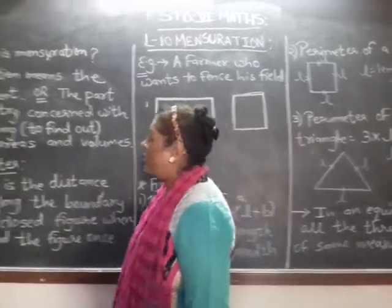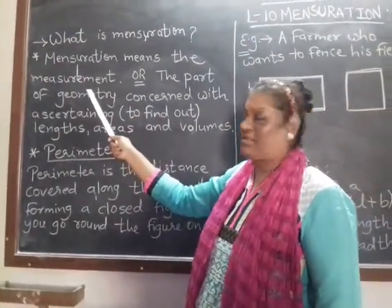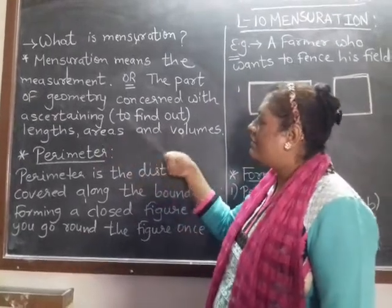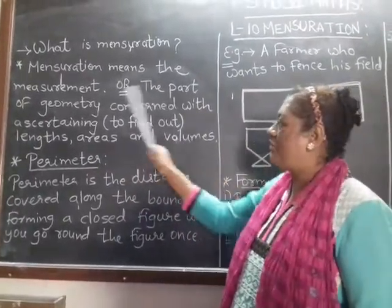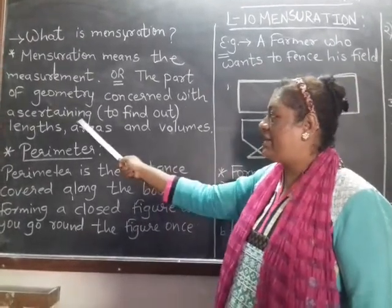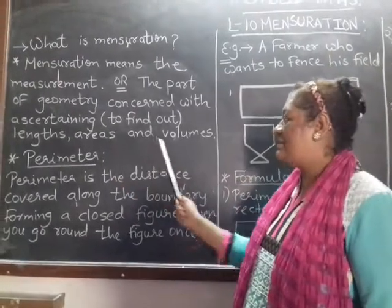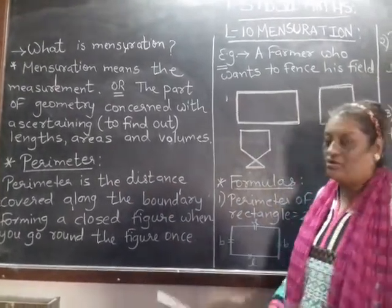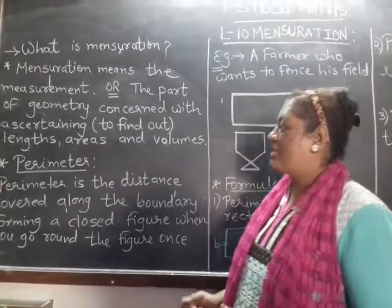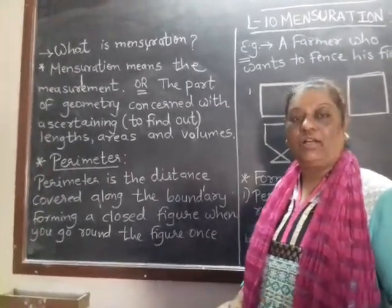Mensuration means what? Mensuration means the measurement, to measure something. Or in detail, the part of geometry concerned with ascertaining or to find out the lengths, areas and volumes. So in short, mensuration is to measure the lengths, areas and volumes of a particular object.